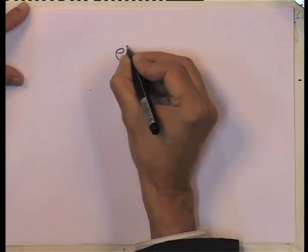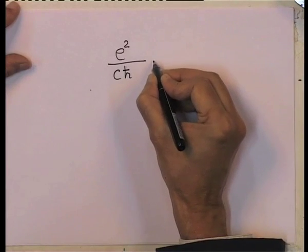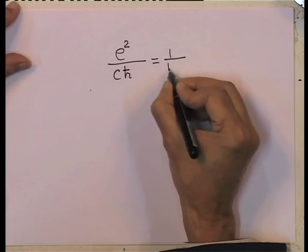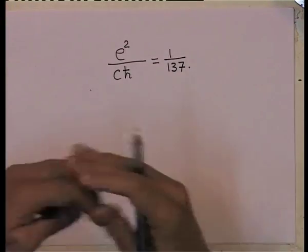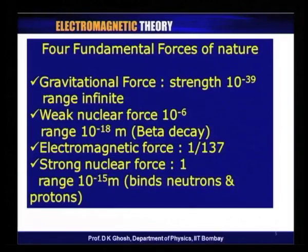The third force is the electromagnetic force, which is what we are involved with in this course — in this module mostly electrostatics. The electromagnetic force has a relative strength of 1/137. This number is the magnitude of the fine structure constant, e² over ℏc, where e is the electronic charge, c is the speed of light, and ℏ is the reduced Planck's constant. This number is approximately 1/137, of the order 10^{-2}. The strongest of them all is what is known as the strong nuclear force.